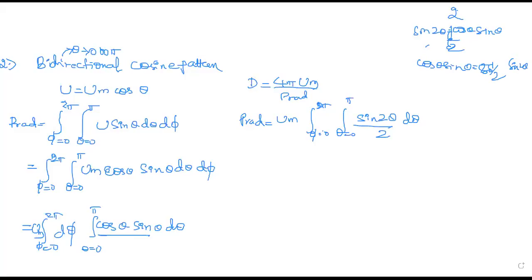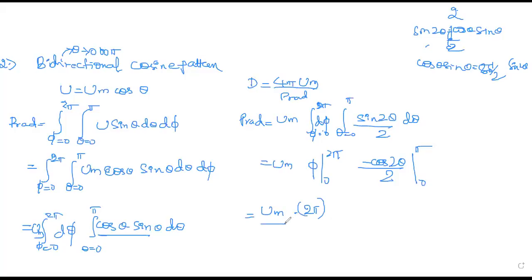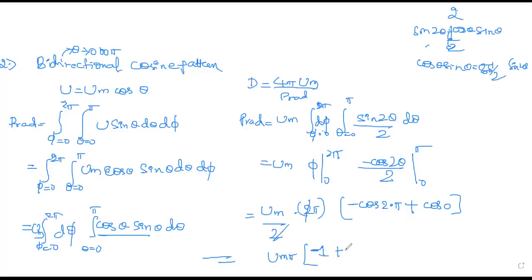Doing the integration: integration of dφ is 2π. Integration of sin2θ is −cos2θ/2, with limit 0 to π. Applying limits: 2π, and the remaining is −cos(2π) minus into minus plus cos0. cos2π = 1, and cos0 = 1. So minus into minus is plus 1, plus 1 = 0. The power radiated comes out to 0. If substituted into the directivity formula, D = 4πUm/0, giving infinity — which is not correct.